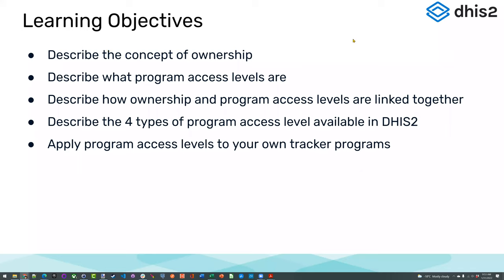In this session, we want to describe a couple of new concepts. First, we want to describe the concept of ownership inside of DHIS2. Then we want to describe what program access levels are. We'll define it together. We then want to describe how ownership and program access levels are linked together. After that, we'll discuss all four different program access levels, see examples inside of DHIS2, and show you how to apply these program access levels to your own tracker programs.